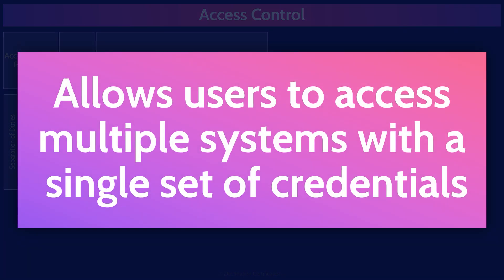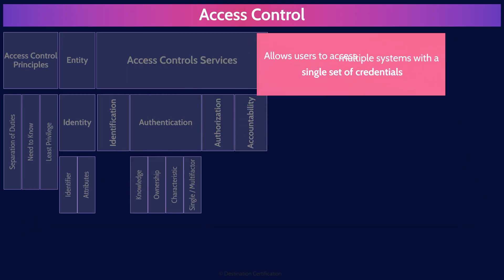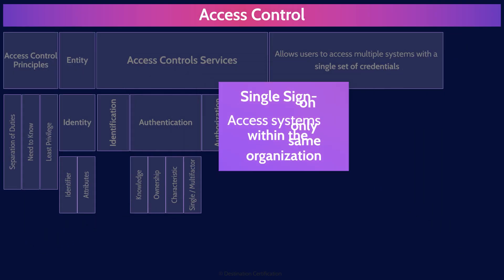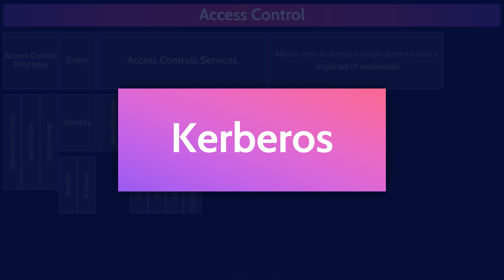Two major types of systems allow users to access multiple different systems with a single set of credentials: single sign-on and federated identity management. Single sign-on only allows users to access systems within a single security domain — systems within a single organization. Federated identity management protocols allow users to access systems across multiple security domains. The one major single sign-on protocol you need to know is Kerberos, which enables authentication via tickets over an insecure network and allows users to access multiple systems while only authenticating once.